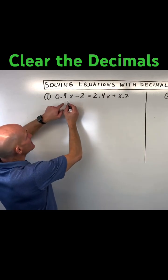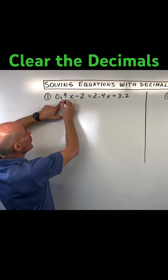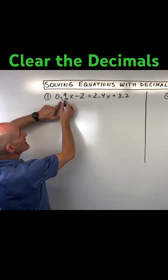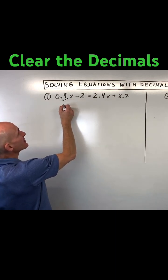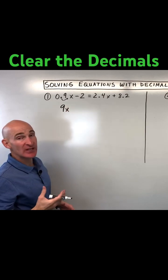Now the nice thing about multiplying by 10 is it moves the decimal one place to the right, making this now 9x, and that's a whole number, which is a little bit easier to work with.